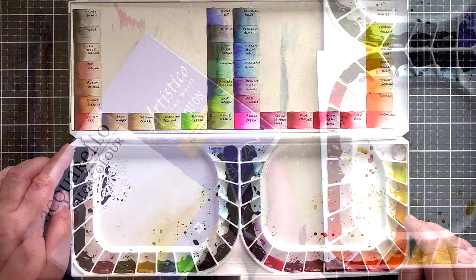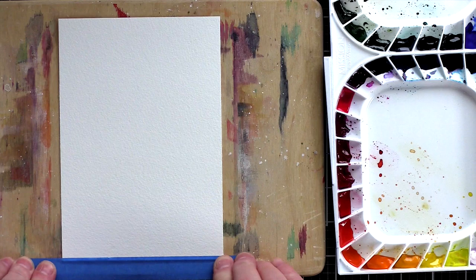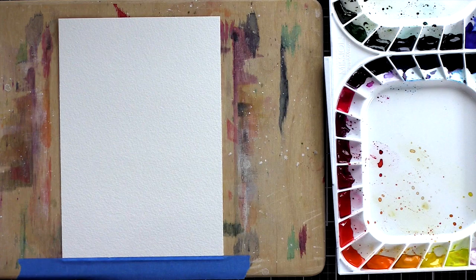I'm using Fabriano Artistico Extra White Cold Press watercolor card which comes in a 5x7 gummed block and I've removed a piece of the card from the block with a palette knife and then taped it to a board with painter's tape. I'm going to be using a lot of water at first and taping the piece down will help prevent it warping.